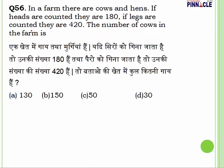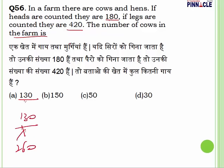Question number 56: in a farm there are cows and hens. If heads are counted they are 180; if legs are counted they are 420. We need to find the number of cows. It is better to solve using the option technique. Trying 130 cows: 130 into 4 legs equals 520, but total legs are only 420 — not possible.